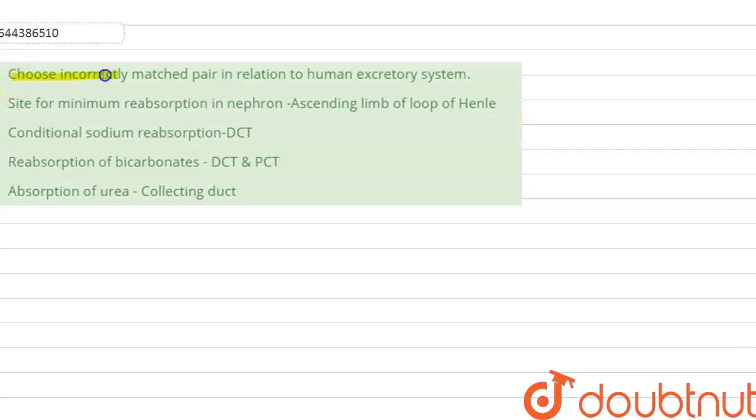Choose incorrectly matched pair in relation to human excretory system. First option is site for minimum reabsorption in nephron: ascending limb of loop of Henle. Conditional sodium reabsorption takes place in the DCT. Reabsorption of bicarbonates: DCT and PCT.